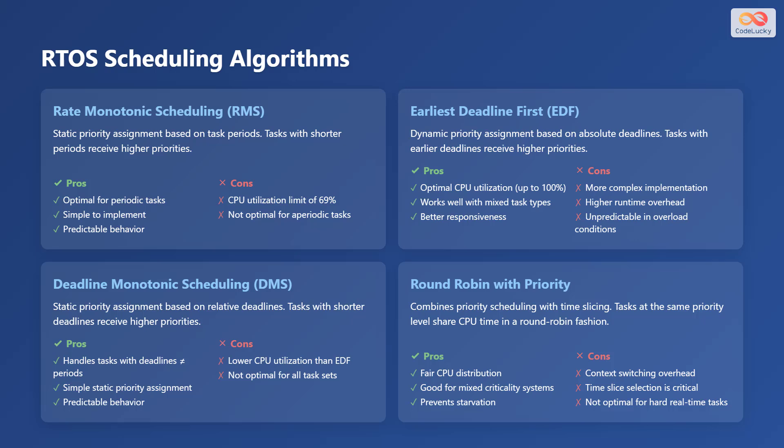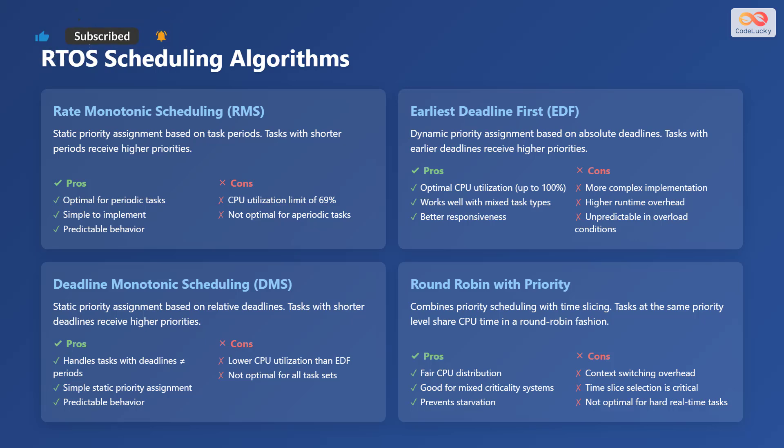Let's explore various scheduling algorithms used in real-time operating systems. First is rate monotonic scheduling, or RMS. It uses static priority assignment based on task periods — tasks with shorter periods receive higher priorities. The advantages of RMS are that it is optimal for periodic tasks, simple to implement, and provides predictable behavior. The disadvantages are a CPU utilization limit of approximately 69% and that it's not optimal for aperiodic tasks.